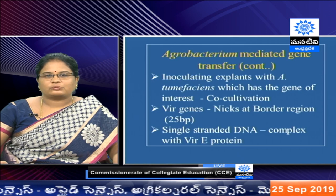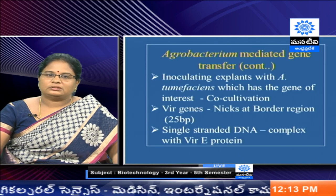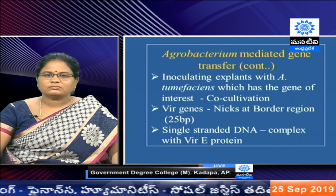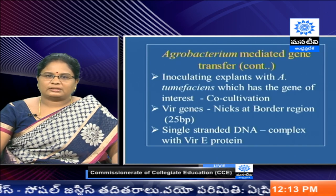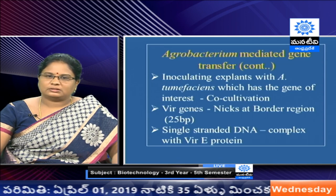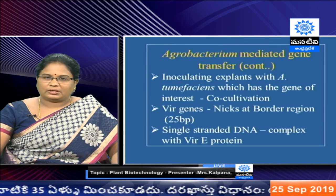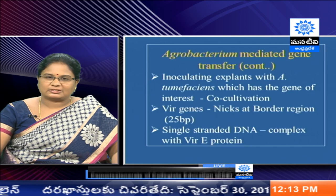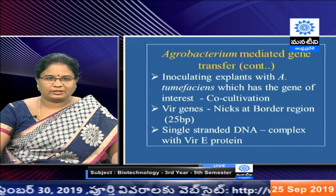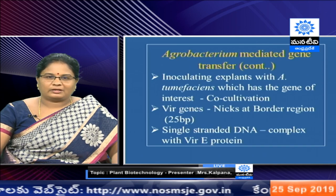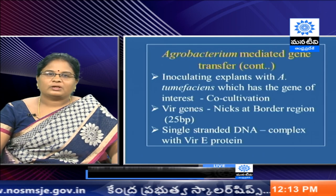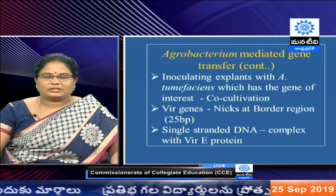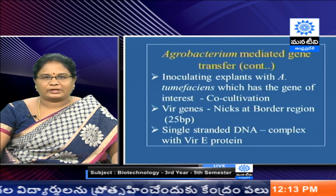During co-cultivation, the vir genes play a role in making a nick at the border region. A nick means only one cut in one strand of the DNA. Because of the vir genes, a nick is made so that we get a single-stranded DNA of the T-DNA region — which now contains our gene of interest instead of the native T-DNA. Once the single-stranded DNA is produced, it makes a complex with the vir E proteins.